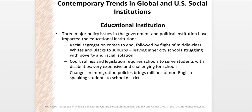Three major policy issues in the last 40 to 60 years have impacted the educational institution. First, the end of racial segregation led to white flight — and middle-class African-Americans also leaving inner cities for suburban areas — leaving urban schools struggling with more poverty and racial isolation. Second, court rulings and legislation required schools to serve students with disabilities — long overdue, but very expensive and challenging, and often unfunded mandates. Third, changes in immigration policies have brought millions of non-English-speaking students into school districts.